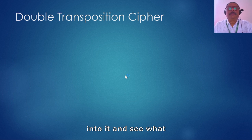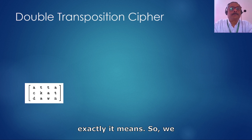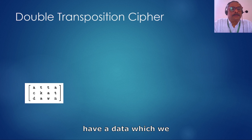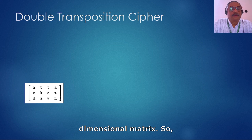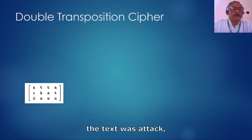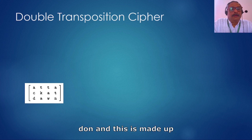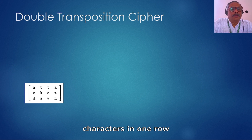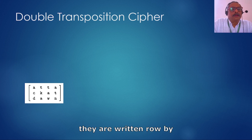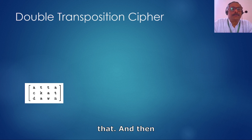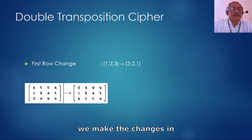Let's jump in and see what exactly it means. We have a data which we convert into a two-dimensional matrix. The text was 'attack at dawn,' which is made up of 12 characters. These 12 characters are placed into a two-dimensional matrix with three rows and four columns, written row by row — that's what the matrix first looks like.